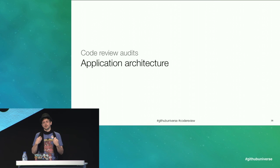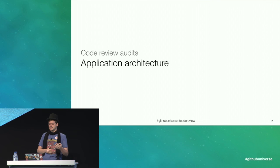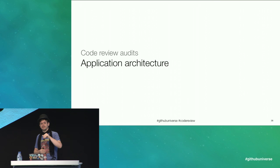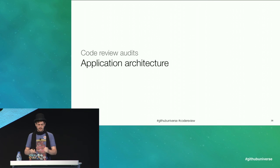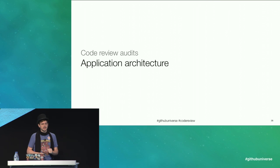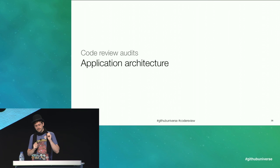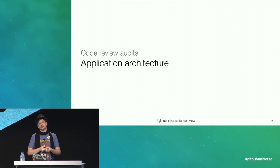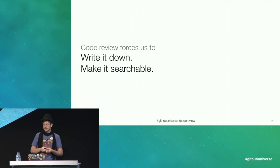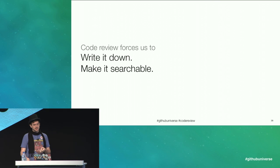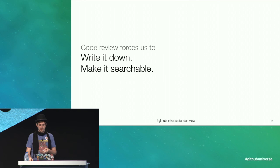Because developers are included in this conversation, the architecture documents should live in the same repository as the code the architecture describes. This allows us to build knowledge of how things changed over time and how things came to be this way. Thus, code review forces us to write it down and make it searchable.